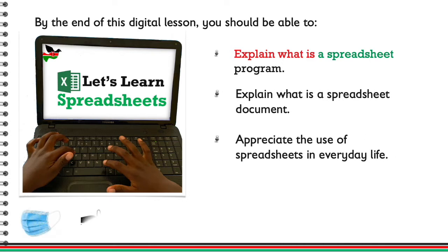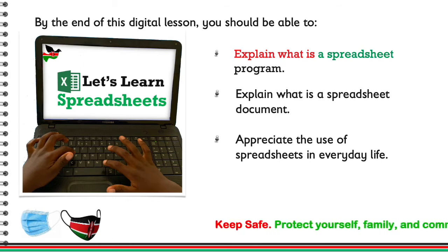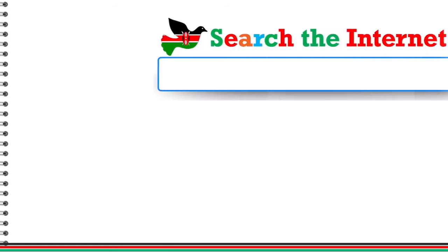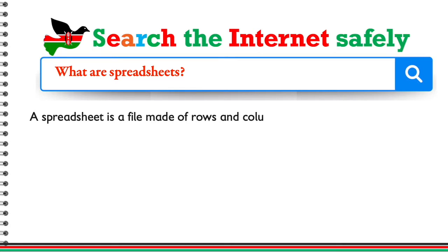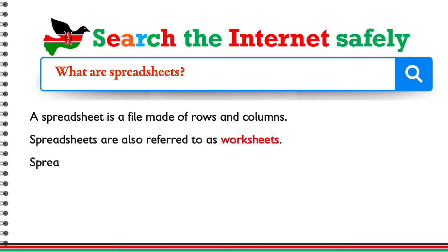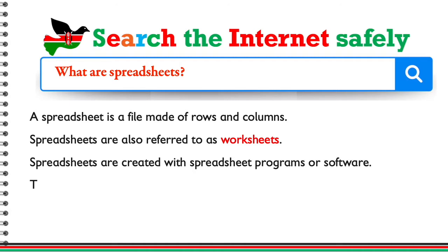What are spreadsheets? A spreadsheet is a file made of rows and columns. Spreadsheets are also referred to as worksheets. Spreadsheets are created with spreadsheet programs or software. They are used to sort data.